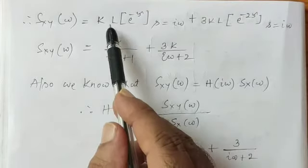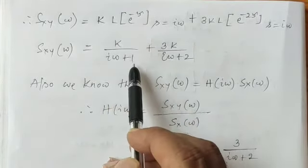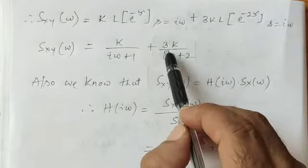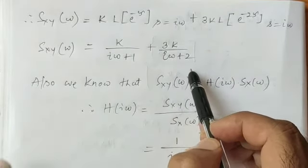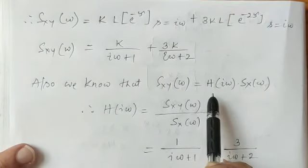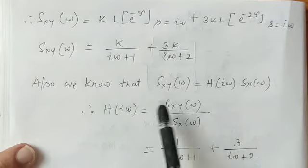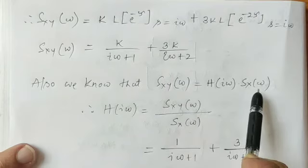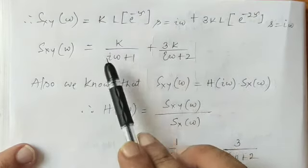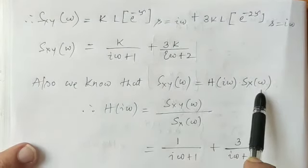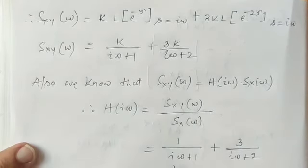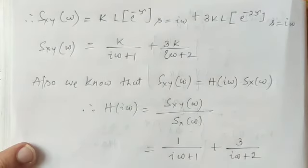We also know that Sxy(omega) = H(i·omega) · Sx(omega). Therefore H(i·omega) = Sxy(omega) / Sx(omega). Dividing our expression by Sx(omega) = k, we get H(i·omega) = 1/(i·omega + 1) + 3/(i·omega + 2). Taking the LCM and simplifying gives a combined fraction.